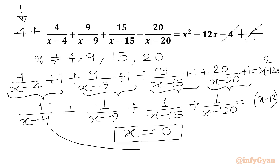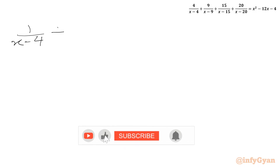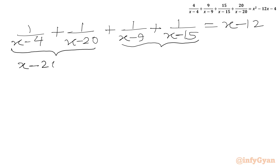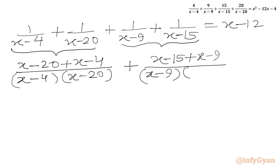Now we are going to club these two terms together and these two terms together and take LCM. So we write: 1/(X−4) + 1/(X−20) + 1/(X−9) + 1/(X−15) equals X minus 12. Taking LCM: (X−20 + X−4) over (X−4)(X−20), plus (X−15 + X−9) over (X−9)(X−15), equals X minus 12.